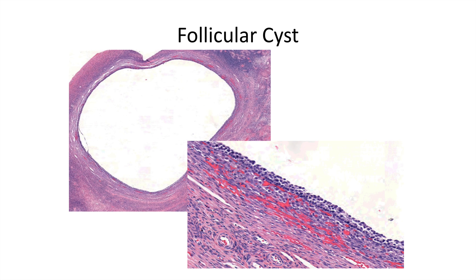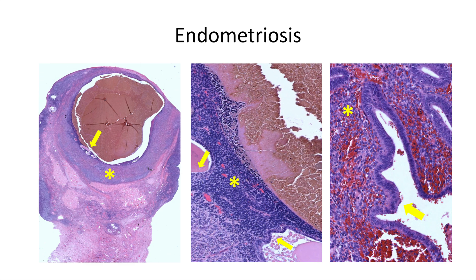Follicular cysts occur most commonly in the reproductive years. They're usually asymptomatic, but they can become large and usually resolve spontaneously. They are lined by follicular cells, usually only a few cell layers thick. Endometriosis is the ectopic location of endometrial glands and stroma outside of the endometrium. On the left is an example of stroma and glands which has formed a cystic mass — the stroma is indicated with an asterisk and the glandular portions with arrows. In the middle image, you can see hemosiderin-laden macrophages surrounding that cystic space full of old blood, with stroma at the asterisk and glands at the arrow. The right image shows similar findings at higher power: endometrial glands and stroma.